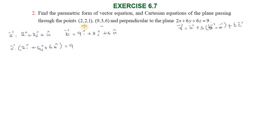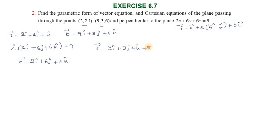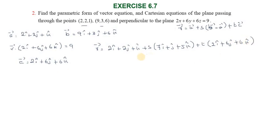The plane is parallel, so we identify c vector equal to 2i cap plus 6j cap plus 6k cap. Now the parametric form: r vector equals (2i cap plus 2j cap plus k cap) plus s times (b minus a), which is 7i cap plus 1j cap plus 5k cap, plus t times c, which is 2i cap plus 6j cap plus 6k cap.